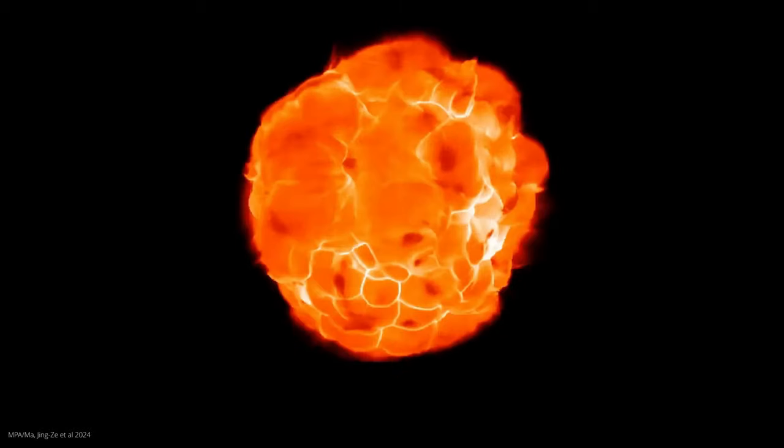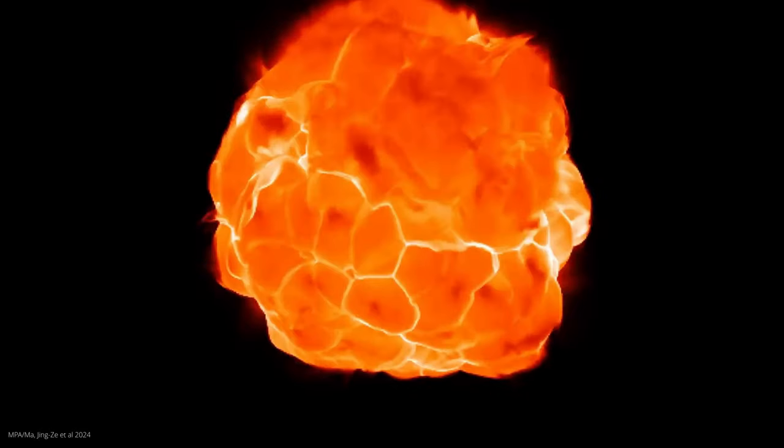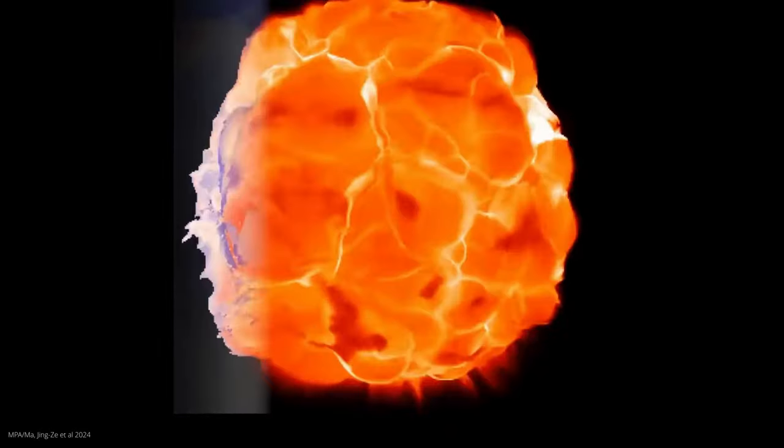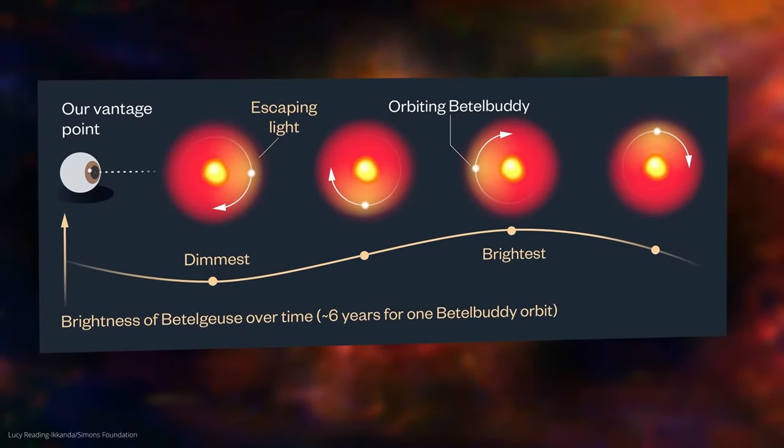But how did the researchers come to this conclusion and what does it have to do with the supernova? Through a very detailed analysis of the movements of Betelgeuse, the star not only fluctuates in brightness but also in its radial velocity, that is, the speed at which it moves away from or towards us. And these changes in speed fit perfectly with a scenario in which a small companion star orbits the main star.